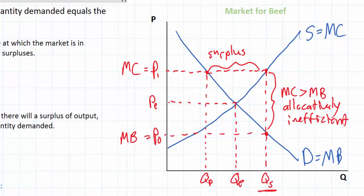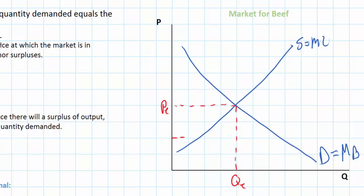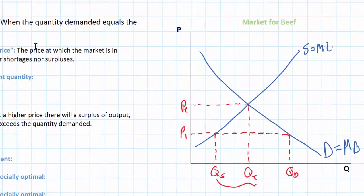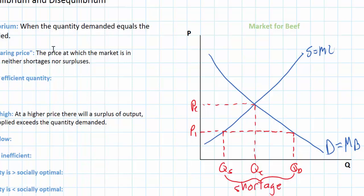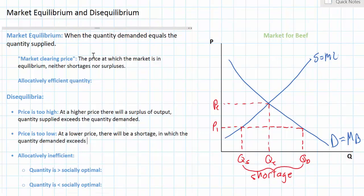Now let's talk about what might happen if the price of beef is lower than the equilibrium price. If the price falls below PE to P1, we end up with another disequilibrium. The law of demand says that as price decreases, quantity demanded increases — so the decrease in price from PE to P1 will cause quantity demanded to increase to QD. On the other hand, producers will find it harder to cover the higher marginal costs of producing the original quantity, so they will rationally reduce their output to QS, resulting in a shortage. A shortage occurs when quantity demanded exceeds the quantity supplied.